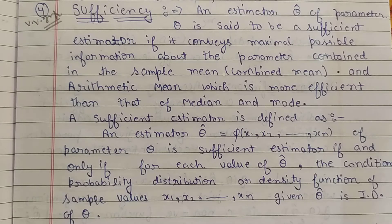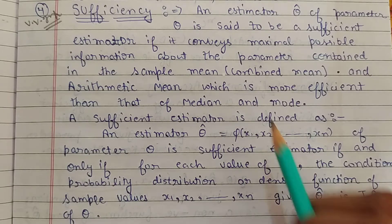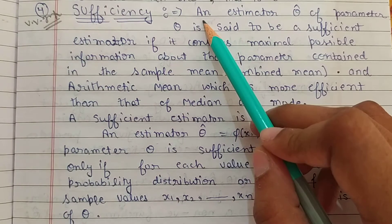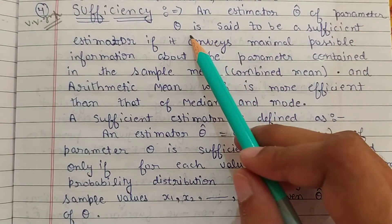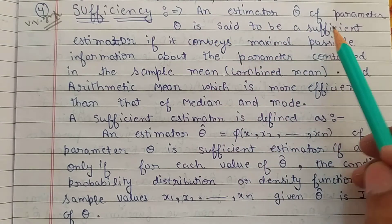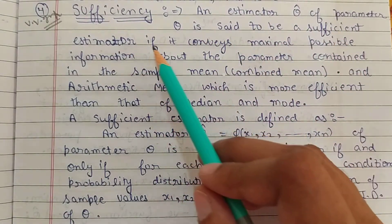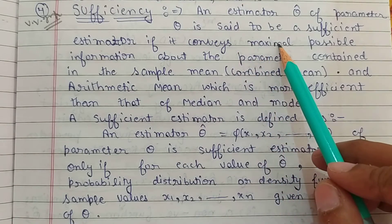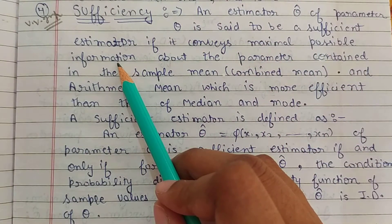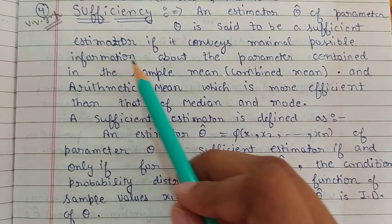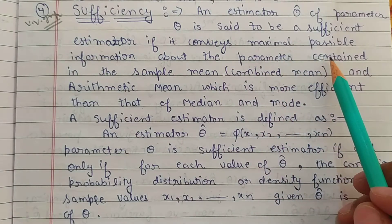Our fourth definition is what is a sufficient estimator. An estimator theta cap of parameter theta is said to be a sufficient estimator if it conveys maximum possible information about the parameter contained in the sample.